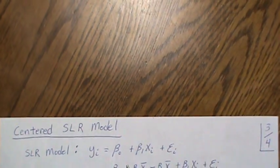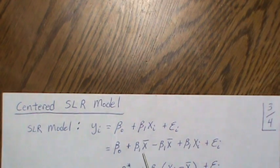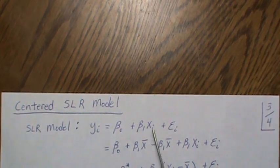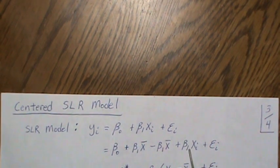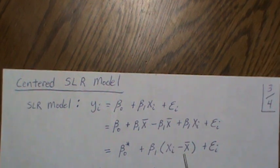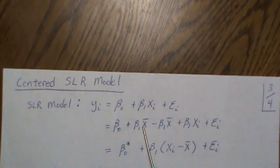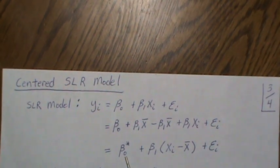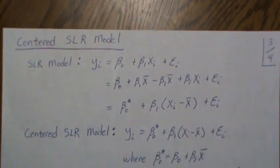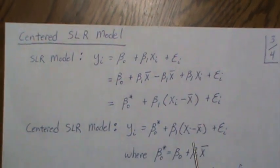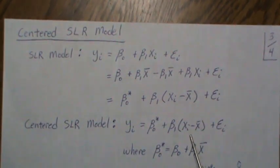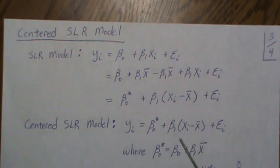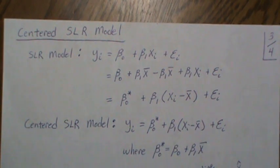Next we introduce the centered SLR model. The standard model is y = beta-0 + beta-1 x + epsilon. We add and subtract the same quantity (beta-1 x-bar) and factor out beta-1, giving a new intercept beta-0-star = beta-0 + beta-1 x-bar. The centered model uses (x_i - x-bar) as the regressor.